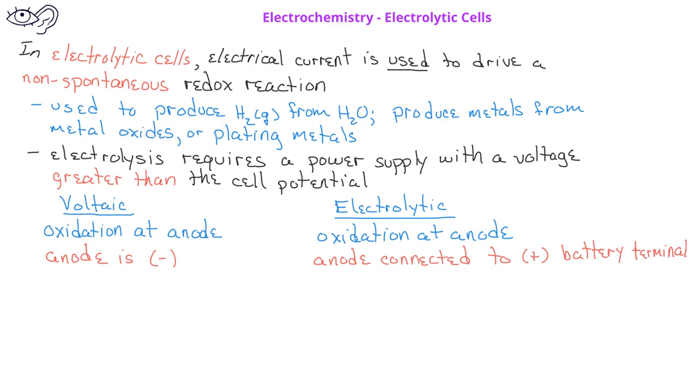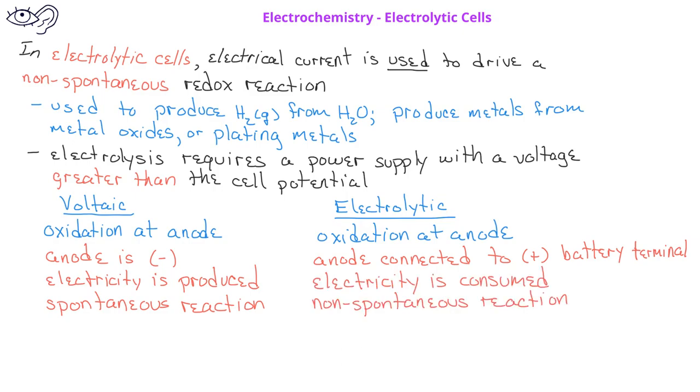In voltaic cells, electricity is produced by the spontaneous redox reaction, whereas in electrolytic cells, electricity is consumed in order to drive a non-spontaneous redox reaction.